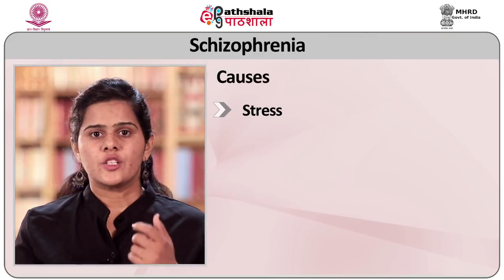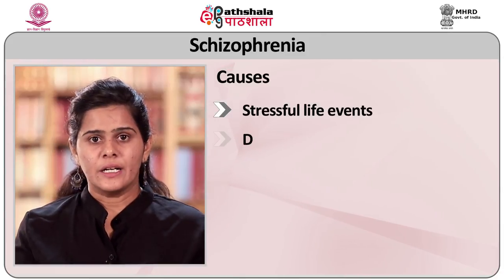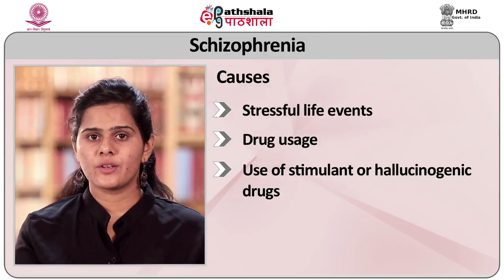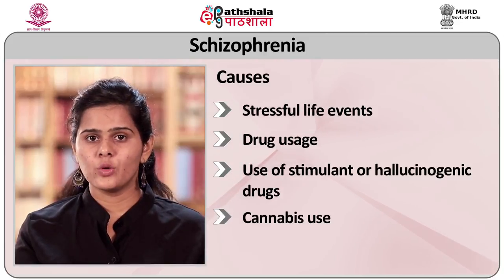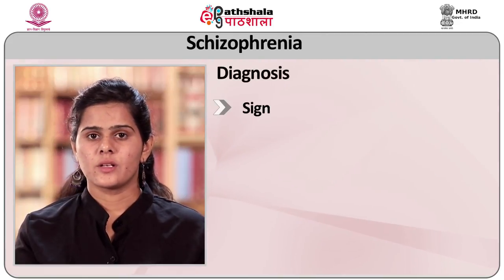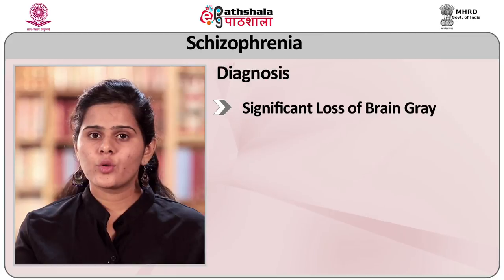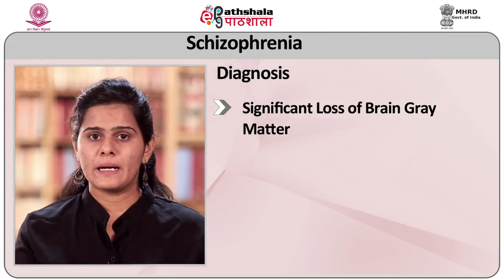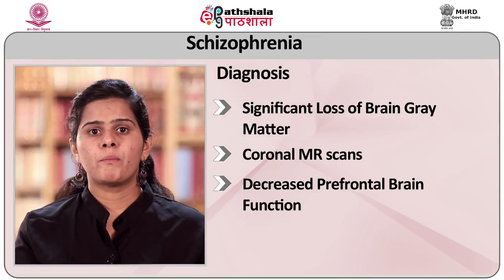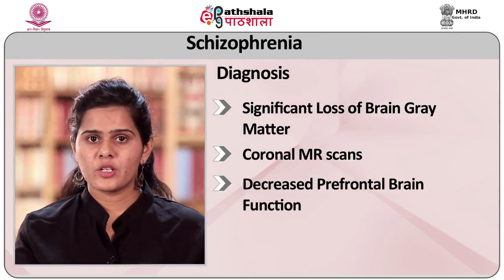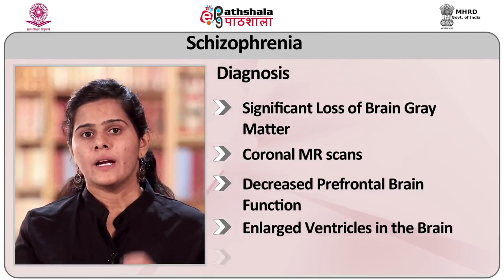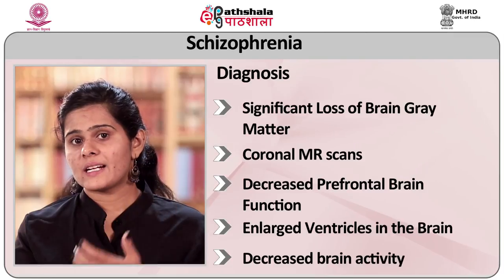Causes of schizophrenia include stressful life events, drug use, use of stimulant or hallucinogenic drugs, cannabis use, and smoking tobacco. Diagnosis involves significant loss of brain gray matter observed on coronal MRI scans, decreased prefrontal brain functions, enlarged ventricles in the brain, and decreased brain activity overall.